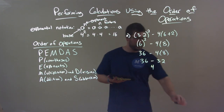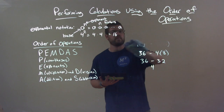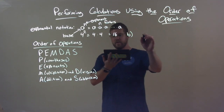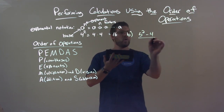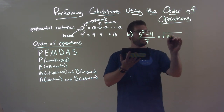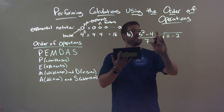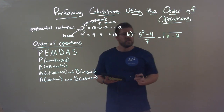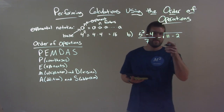Let's go through another example. We have 5 squared minus 4 over 7, minus the square root of (11 minus 2). Pause this video right now, see if you can solve it yourself, go through your steps, and then follow along with me.